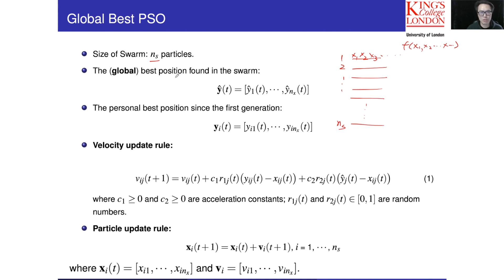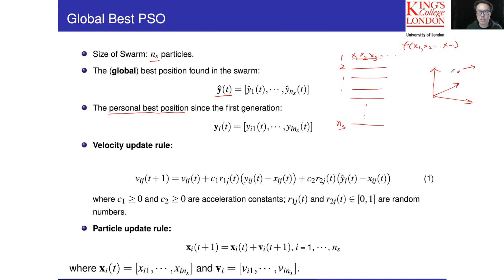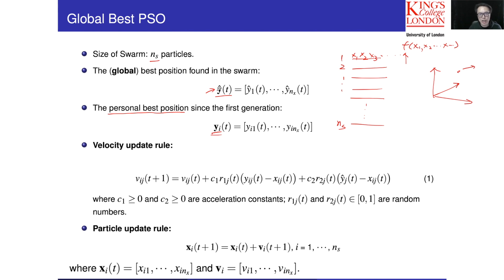The global best position is denoted using y-hat — it is the best position found by the entire swarm. The personal best position means each particle flies through the space iteration by iteration, collecting different information and evaluating cost. The best personal position is the best solution found by each individual particle, denoted y_i. The global best y-hat is the best of all personal best positions.